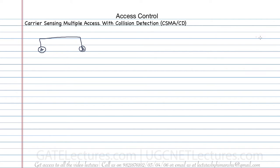Let's look at the backoff algorithm related to CSMA/CD. For example, if there are two stations A and B connected together — station A wants to send some data and station B also wants to send some data — there is a collision. After the collision, a collision signal is sent to A as well as to B. Now, after the collision, how much time should a station wait before it starts retransmitting? The backoff algorithm gives you that waiting time.